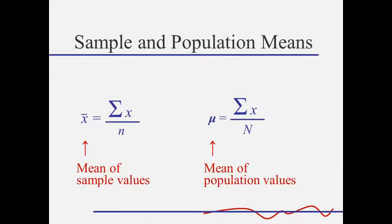In the book, you will notice two different formulas for the mean: one for the sample mean and one for the population mean. It's important for us to have different symbols for these two things because later on in the course, we're going to want to compare the sample mean to the population mean. So the sample mean is marked with an x with a bar on the top — we call that x-bar — and the population mean is marked with a Greek letter mu. But for both of these formulas, it tells us to do just what we've already discussed: we add up all the values and then divide by the count of the values.